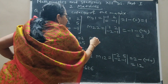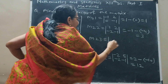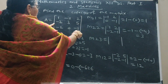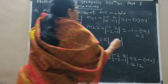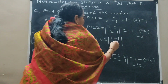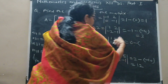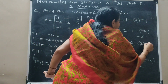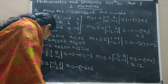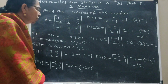Then M23: delete the second row and third column. Remaining elements are 1, minus 1; minus 2, 0. This gives 0 minus 2, finally this is minus 2. So M23 = minus 2.